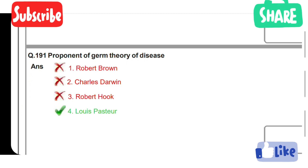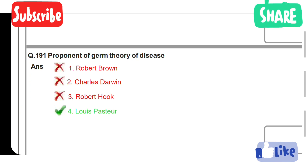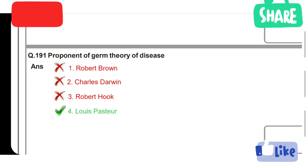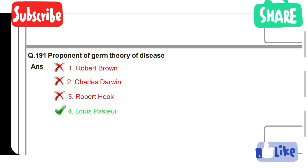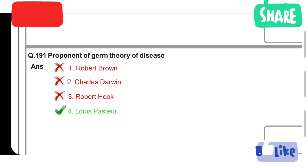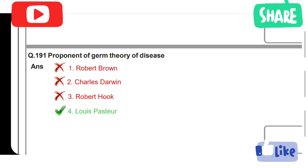First question: Proponent of Germ Theory of Disease. Option 1: Robert Brown. Option 2: Charles Darwin. Option 3: Robert Hook. Option 4: Louis Pasteur. Louis Pasteur is the correct answer. The fourth option is the correct answer.